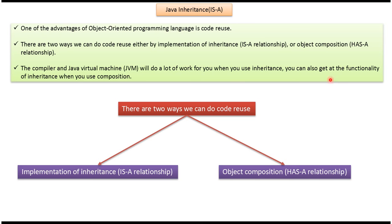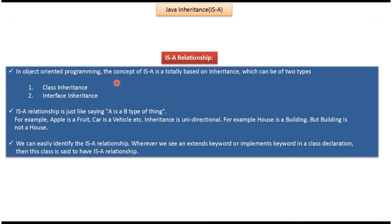You can also get at the functionality of inheritance when you use composition. In object oriented programming, the concept of is-a relationship is totally based on inheritance. And inheritance can be two types: the first type is class inheritance and the second type is interface inheritance.